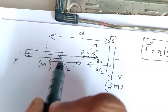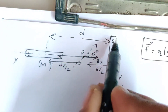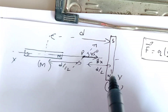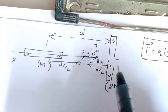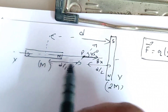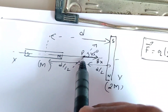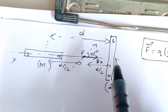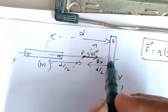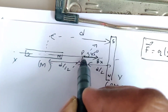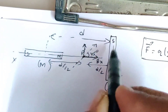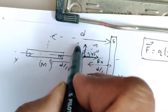Whether it is for the axial line or the equatorial line, the magnetic field is always parallel to the axis of the dipole. But for the axial line it is in the direction of the magnetic dipole moment, and for the equatorial line the magnetic field is opposite to the direction of the magnetic dipole moment. So for this dipole, the magnetic dipole moment is from south pole to north pole, meaning By will be in the opposite direction but again parallel to the dipole.